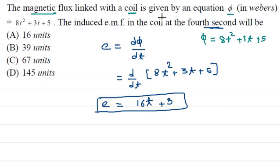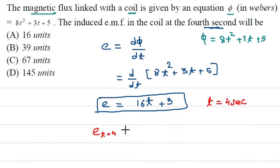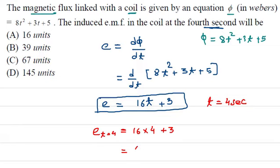For t = 4 seconds: E = 16 × 4 + 3 = 64 + 3 = 67 Volts. So the induced EMF in the coil at the 4th second is 67 V.